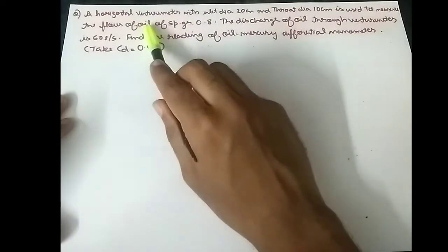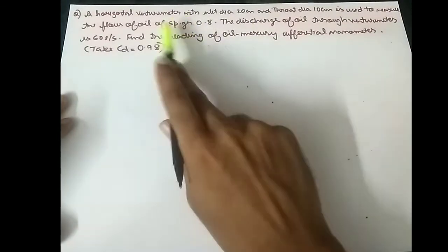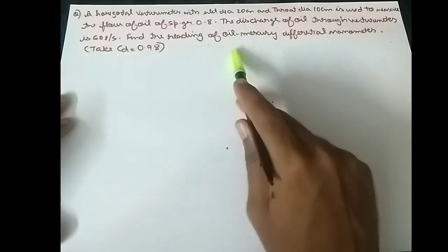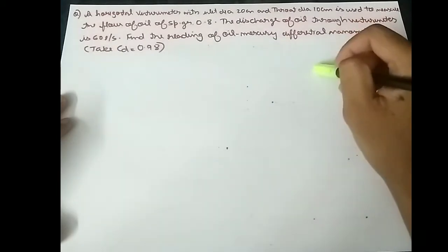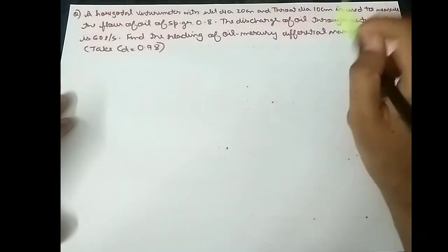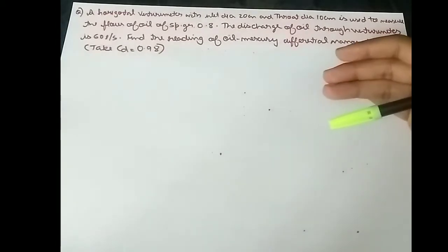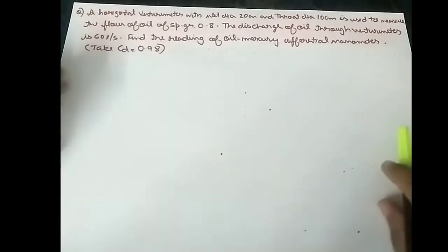The fluid flowing through the pipe is oil. In my previous video, the fluid flowing through the pipe was water. The specific gravity of oil is given as 0.8. The question asks us to find X, where X is the difference of the heavier liquid in the manometer.